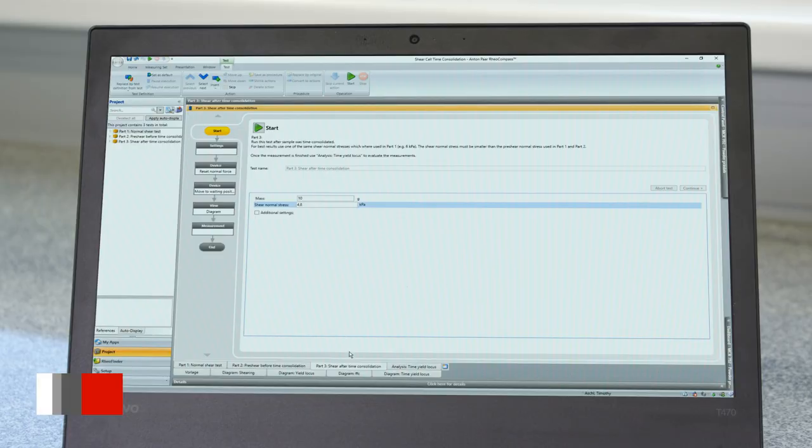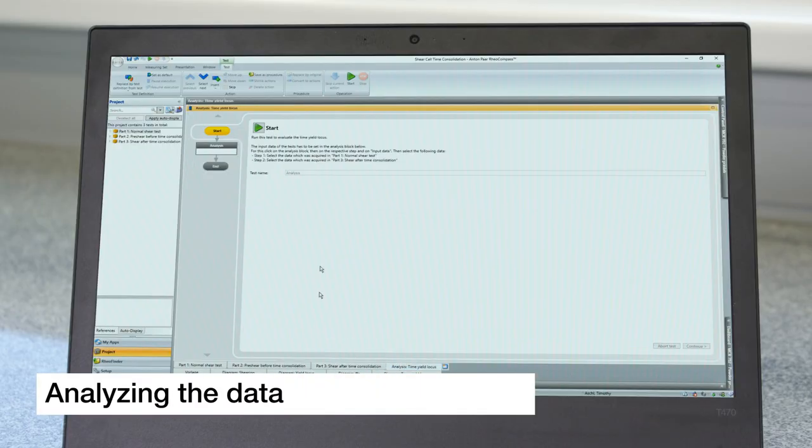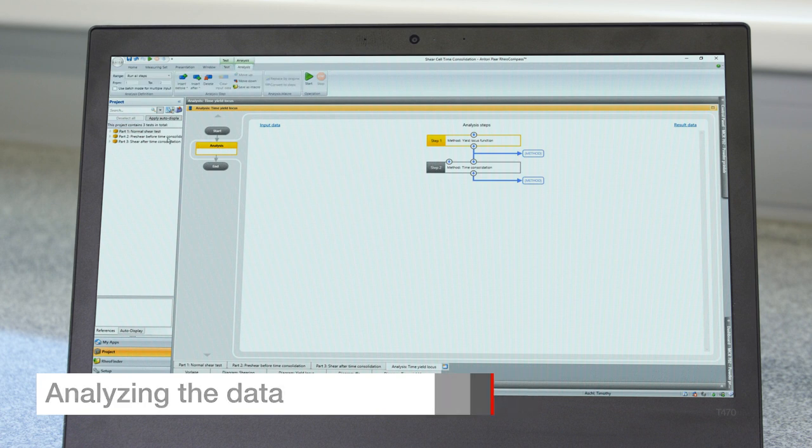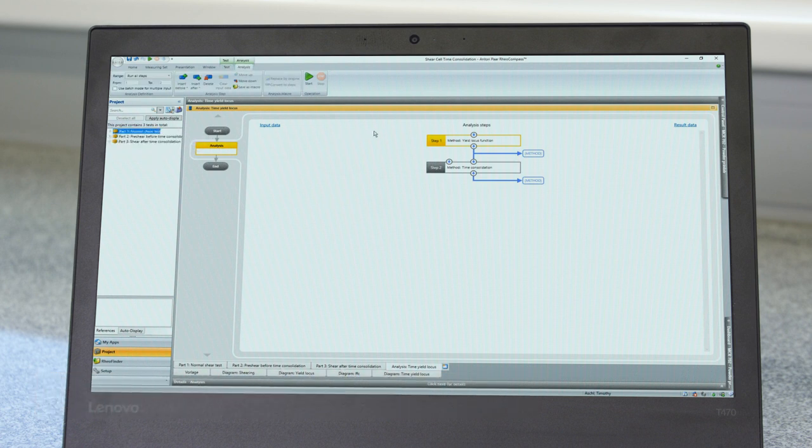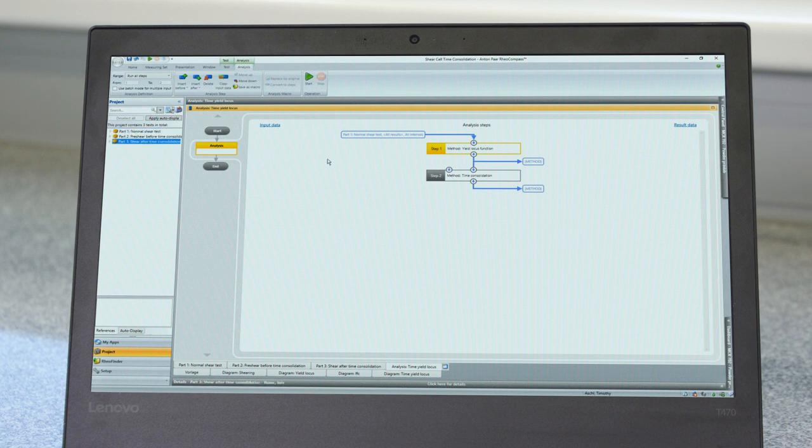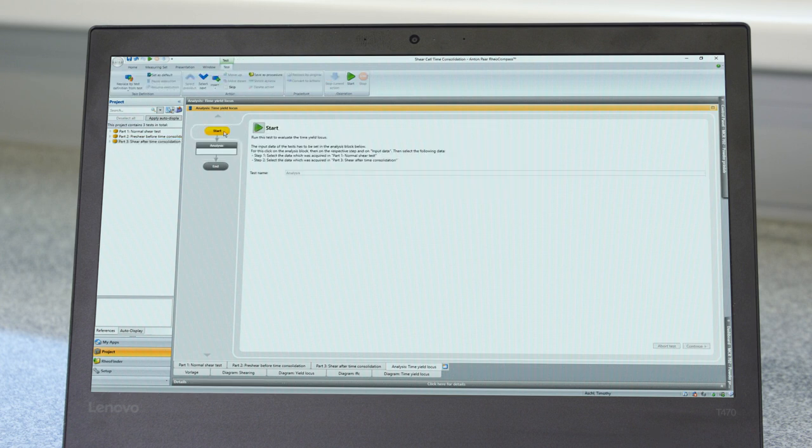Once the measurement is finished, go to the Analysis tab and select the input data for the analysis. In order to do this, drag and drop the data from the Part 1 measurement onto the input of Step 1, and then drag and drop the data from Part 3 onto the input of Step 2. Start the analysis by clicking on Start.